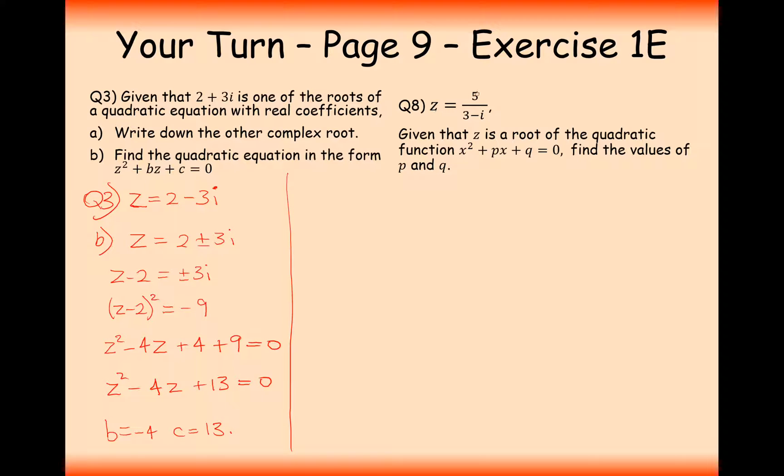Question 8 gives us z equals 5 over 3 minus i. Given that z is a root of a quadratic x squared plus px plus q equals 0, find the values of p and q. Well, there's not much for us to do apart from rationalise this denominator. We're going to have to first rationalise that denominator or divide these two complex numbers by each other. The way we do that is we times by the complex conjugate on the top and the bottom.